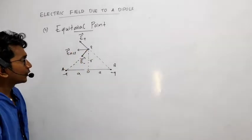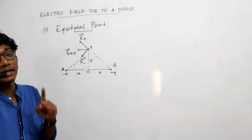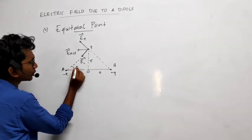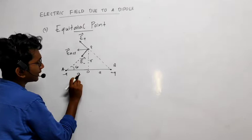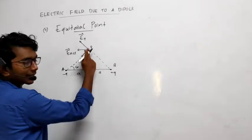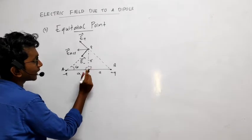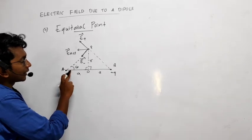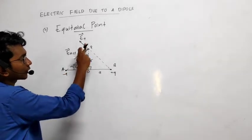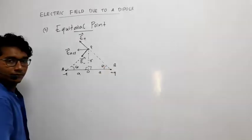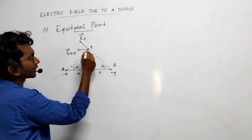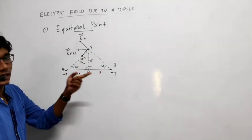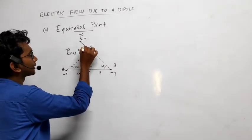Before that, you have to understand the angle idea. Let's say the angle is theta. You know that both sides are A and A, this is the common side R, and this angle is 90 degrees — both are perpendicular. This is theta and A, and the common side R. So this line is the angular bisector, meaning this angle will be equal to this angle — both angles are theta.